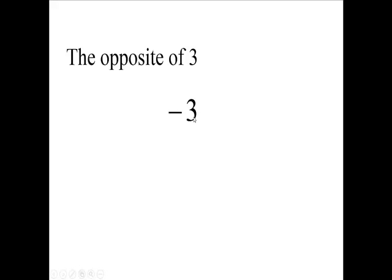The opposite of 3 is negative 3. You could read this as 'minus 3' or 'the opposite of 3.' But when you say 'the opposite of x,' we write it this way — don't read that as 'negative x,' because sometimes the opposite of x can be a positive value. We'll see that in a minute.